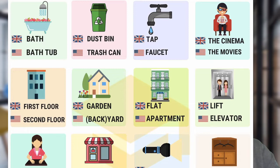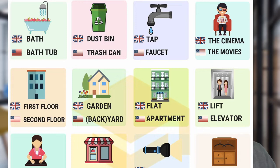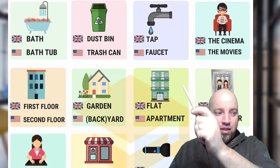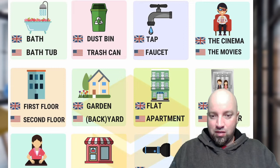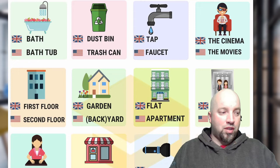Next one is 'dustbin' and 'trashcan' — we would say 'trashcan.' Next one is 'faucet' and 'tap' — we already went over that. 'The cinema' and 'the movies' — we would say 'the movies.' This one's interesting: 'first floor' and 'second floor.' A lot of times you'll go to a building with an elevator and there'll be a main floor or a ground floor, and a first floor. If I'm on the ground and go up one, I would say 'first floor' — I would call the very bottom one the 'ground floor' or 'ground level.'